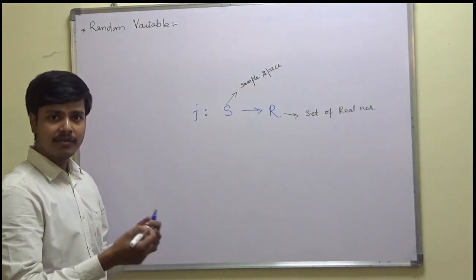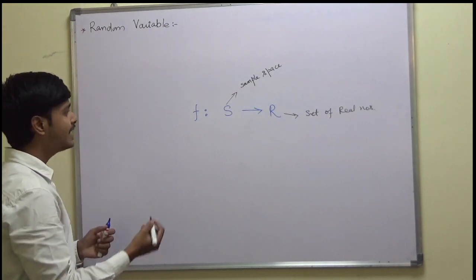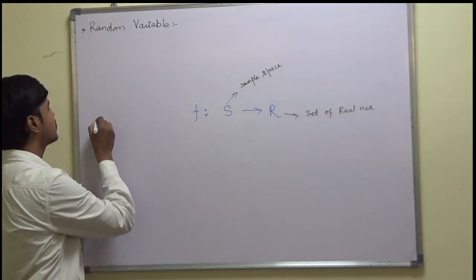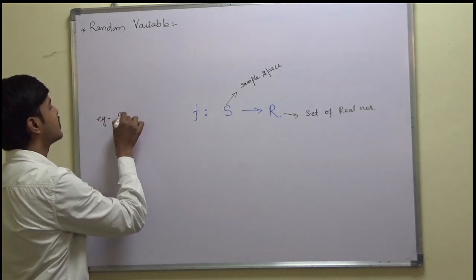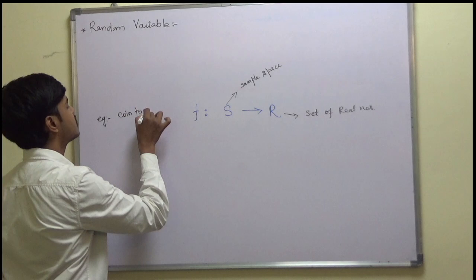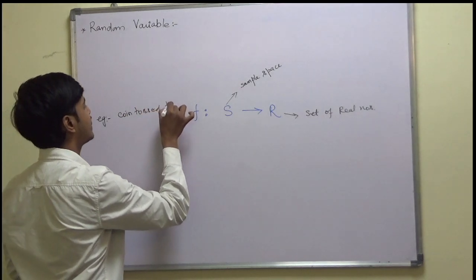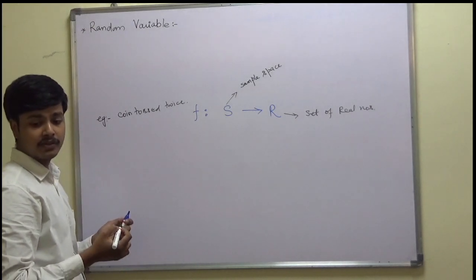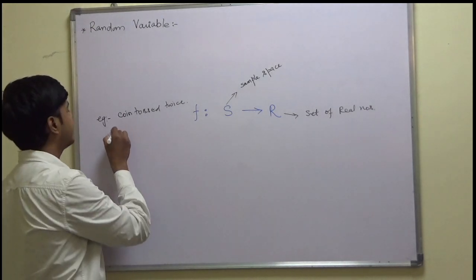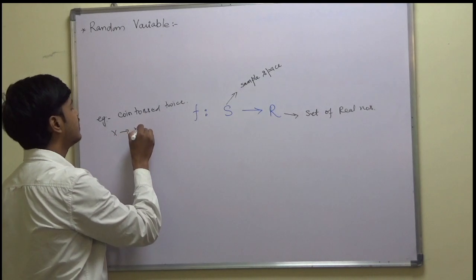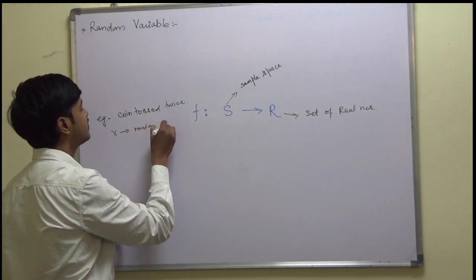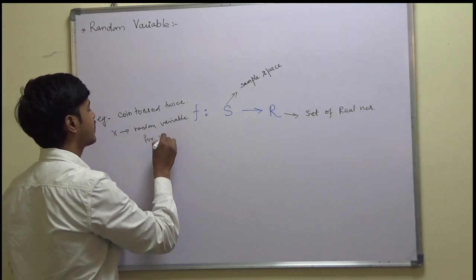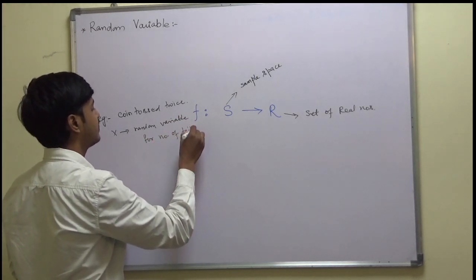To make it understood easily, let us take a simple example. Suppose a coin is tossed twice, and let X be the random variable for the number of tails.